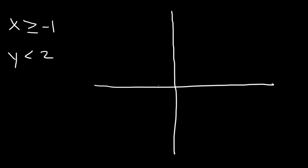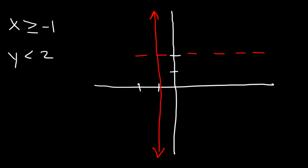First, let's graph it. Let's plot the line x is equal to or greater than negative 1, which is a vertical line. It's also a solid line, because it can be equal to negative 1. And we have another one at 2. This one's going to be a horizontal line. And y is greater than 2, but not equal to 2, so it's going to be a dashed line.